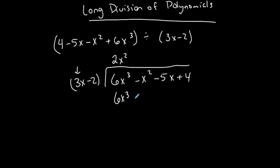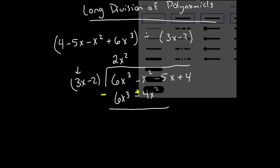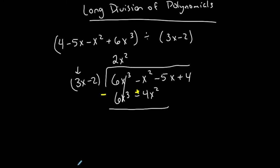2x² times 3x is 6x³ — those match. 2x² times negative 2 is negative 4x², and I'm lining up like terms. Now I subtract, but that negative distributes to every term — I'm subtracting a polynomial. So this becomes minus 6x³, and that negative makes this a plus 4x². Negative x² plus 4x² is 3x², and I bring down the rest of my polynomial.